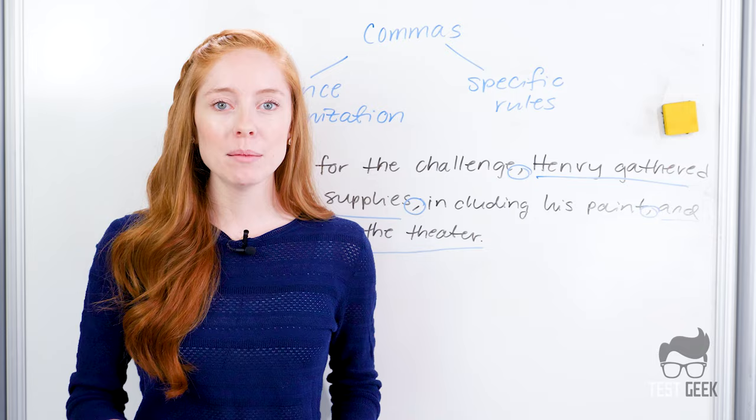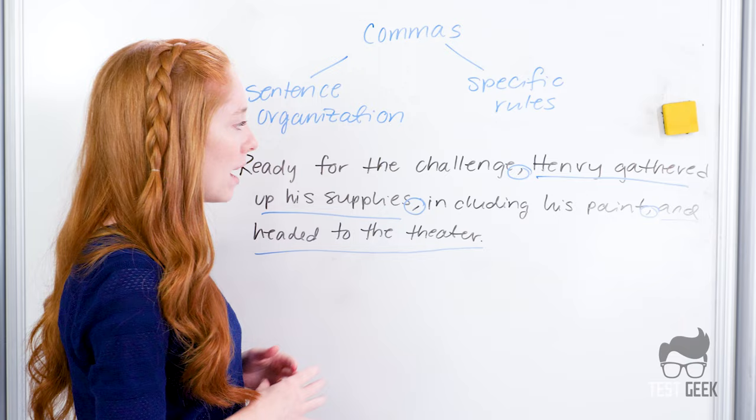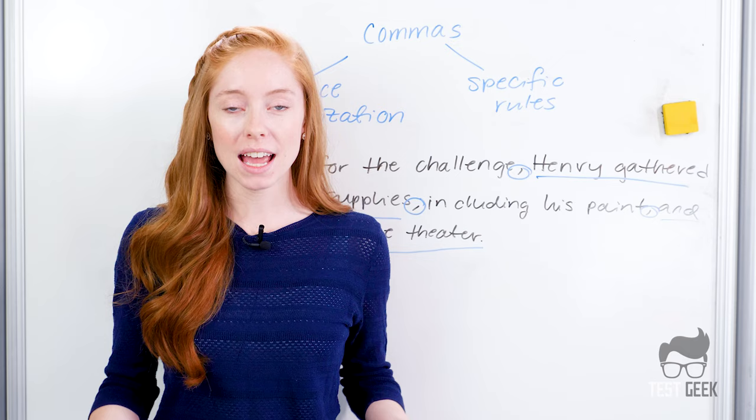take a look at the sentence as a whole. Assume there's no commas there. Start from scratch. Find your basic sentence, and then surround everything else with commas. Sometimes this additional information will be at the beginning of the sentence, and you'll need to just have one comma after it.